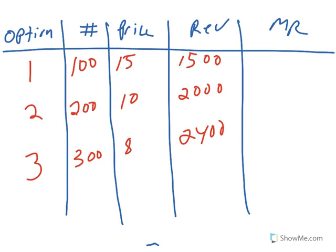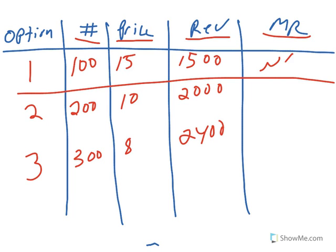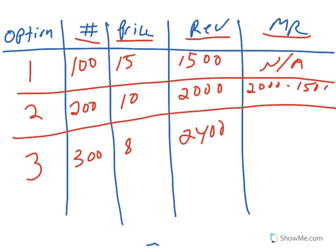Much like before, we set up a grid with three production options showing quantity, price per unit, total revenue, and marginal revenue. Using the same quantities — 100, 200, and 300 units — at prices of $15, $10, and $8 respectively, we get total revenues of $1,500, $2,000, and $2,400. Marginal revenue for option one is not applicable. For option two it is $2,000 minus $1,500, which equals $500. For option three it is $2,400 minus $2,000, which gives us $400.